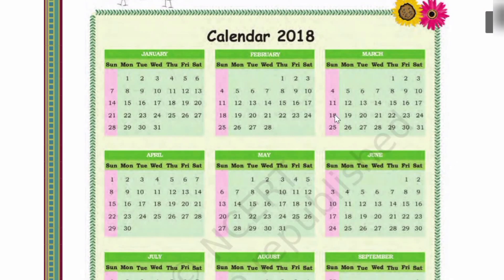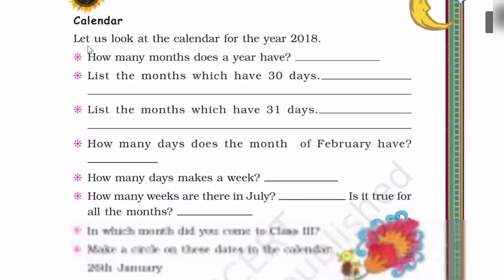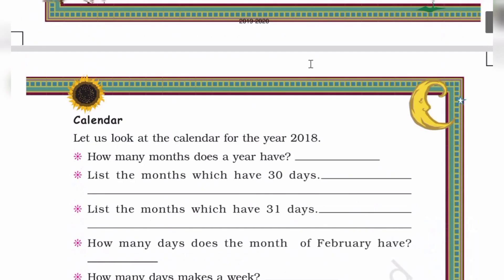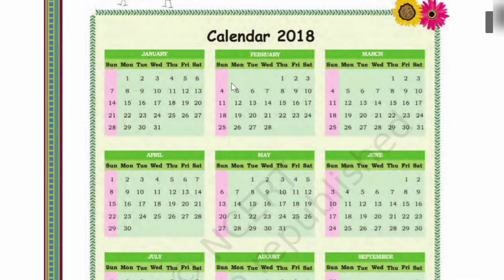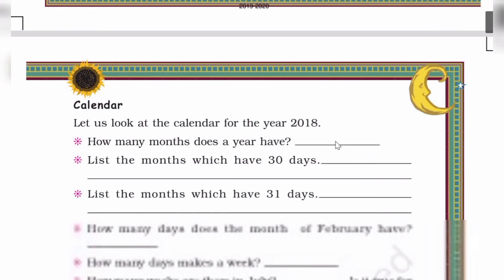Calendar 2018. Let us look at the calendar for the year 2018. How many months does a year have? Let's count. 1, 2, 3, 4, 5, 6, 7, 8, 9, 10, 11, 12. Total 12 months.